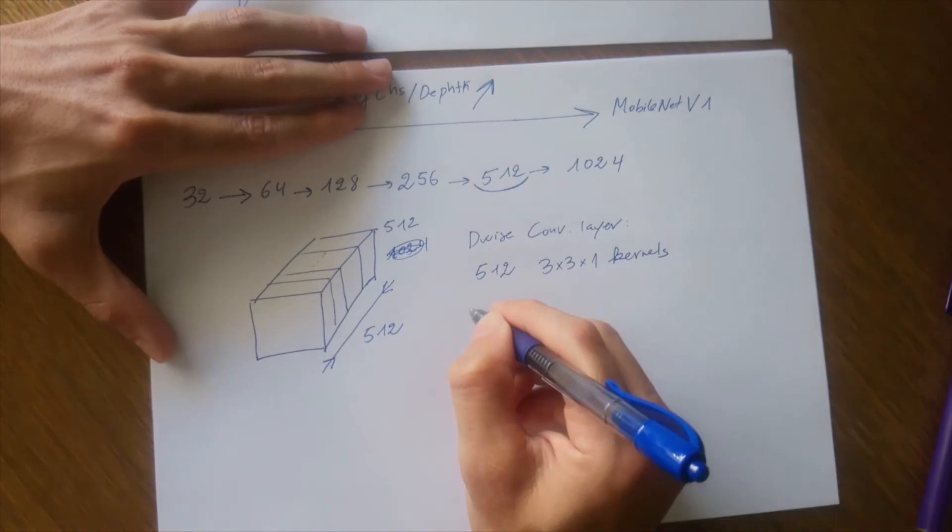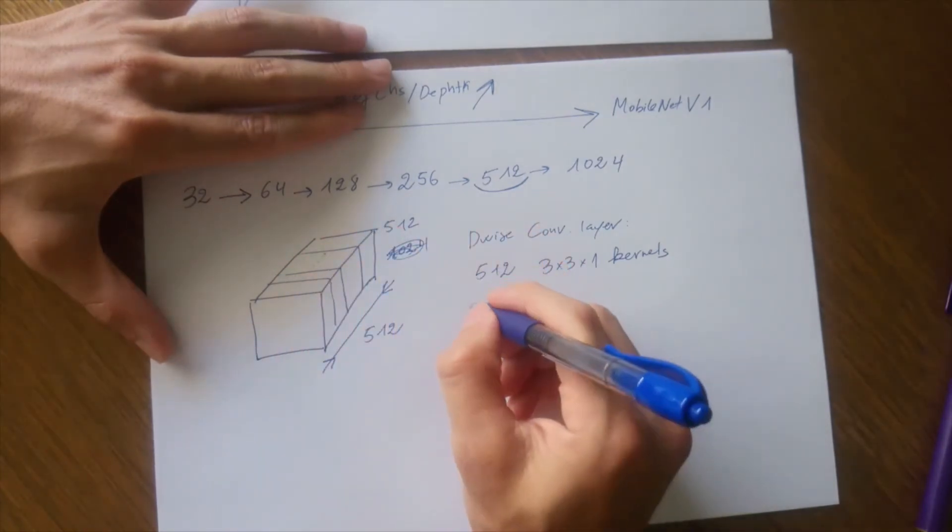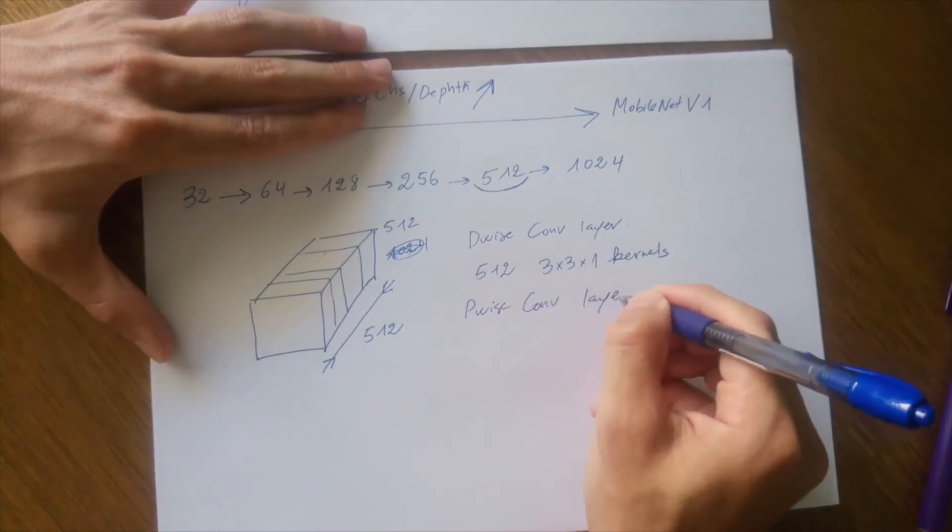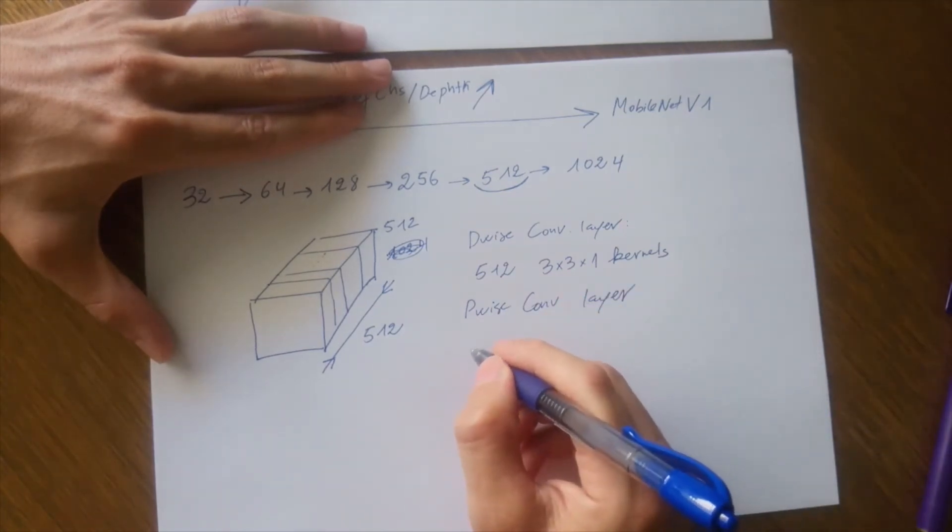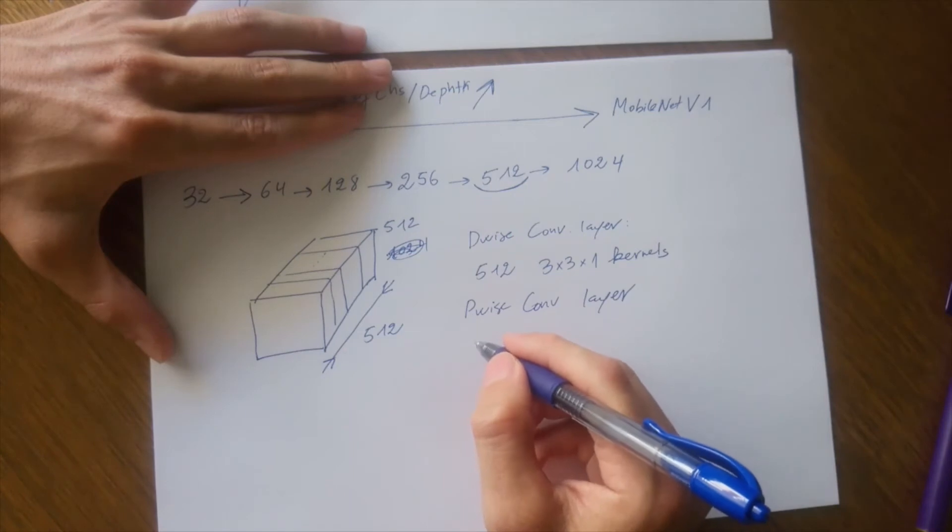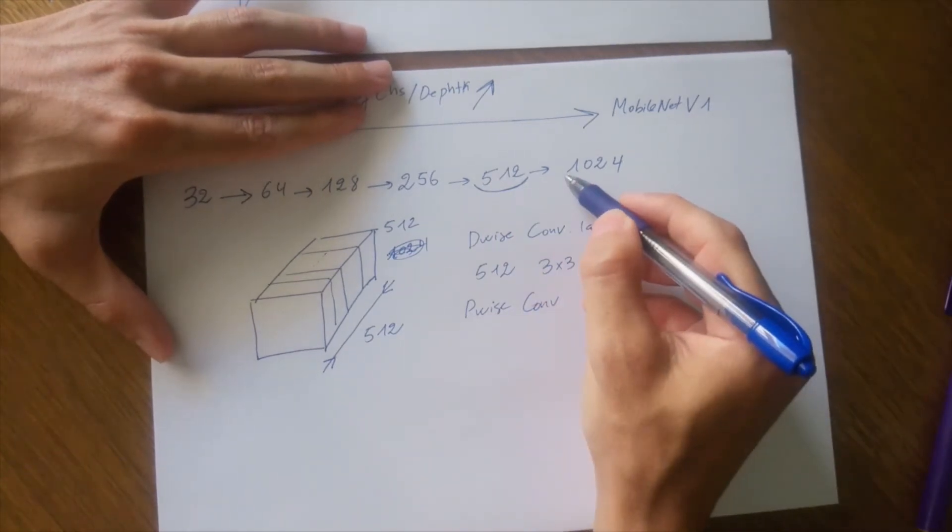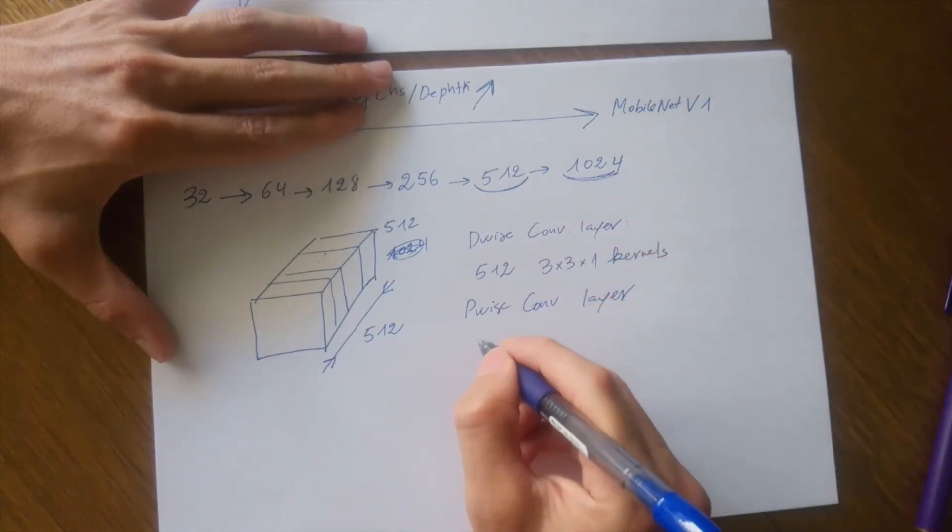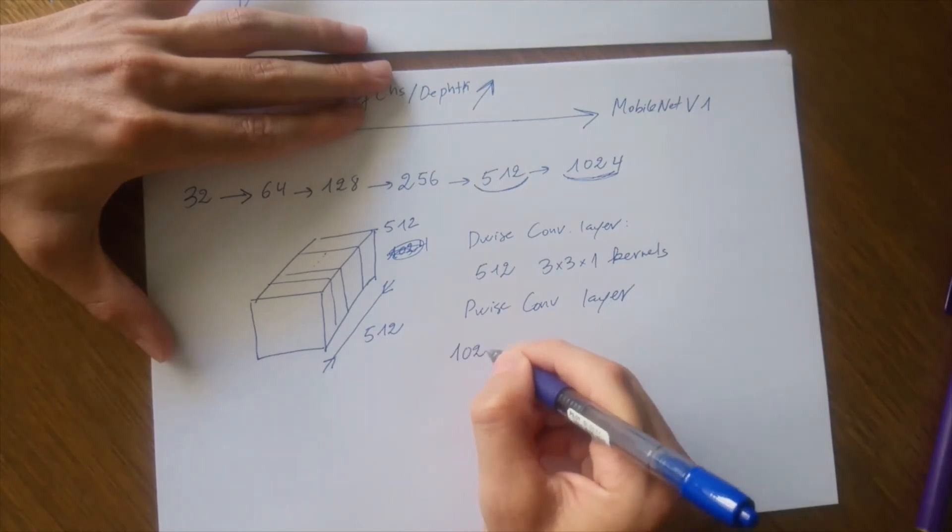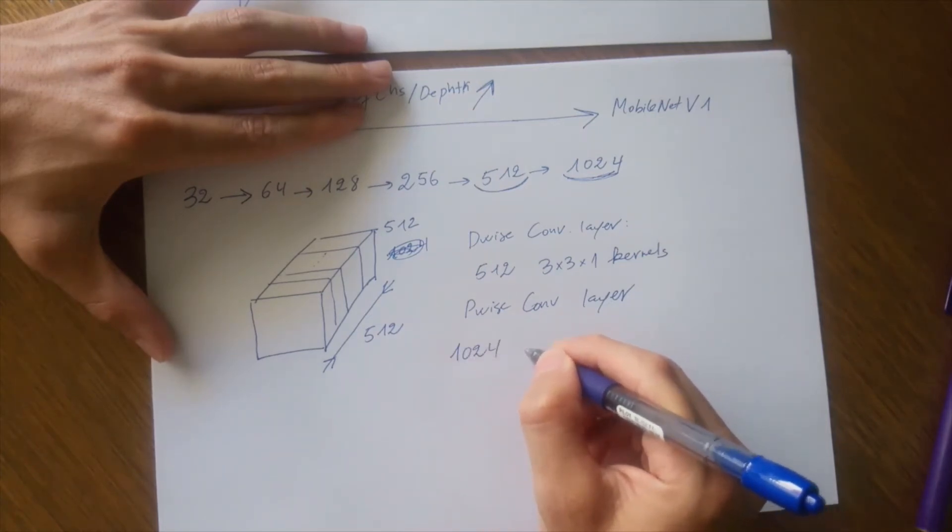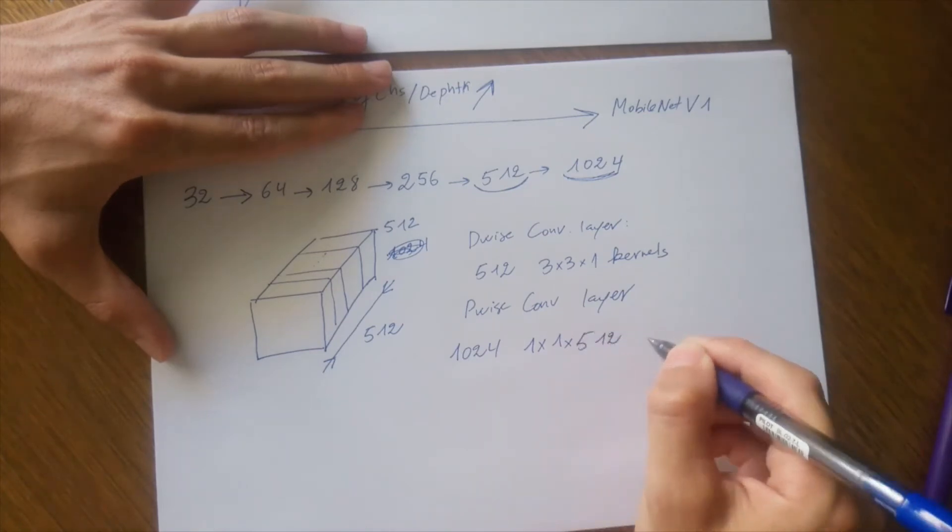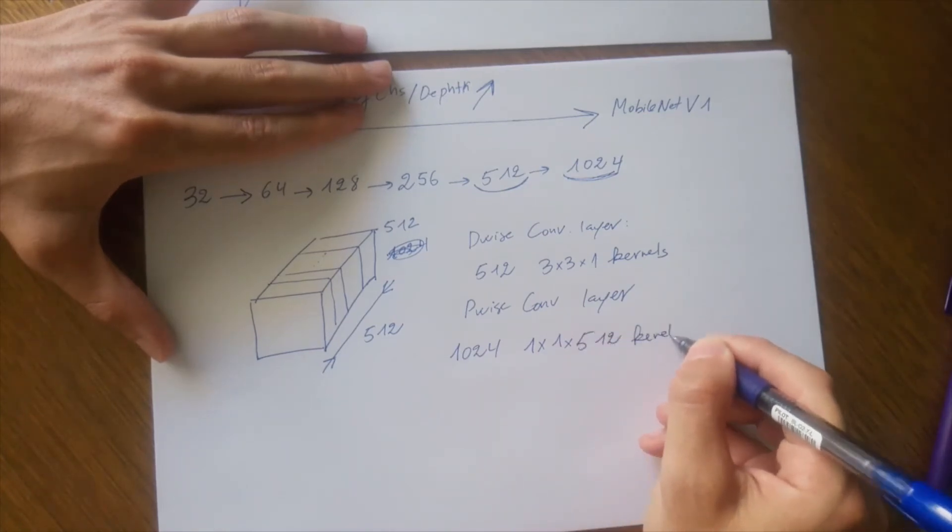Similarly, if you want to filter this output with pointwise convolutional layer, then you would need, so the number of channels in the next output is 1024. So this means that we would need 1024 one by one by 512 kernels, right?